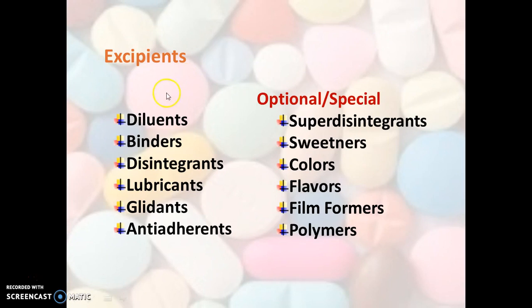The basic essential excipients used during the manufacturing of tablets are diluents, binders, disintegrants, lubricants, glidants, and anti-adherents. In addition, there are various optional or special excipients used in varieties of tablets other than conventional tablets, such as super disintegrants, sweeteners, colors, flavors, film formers, and polymers.